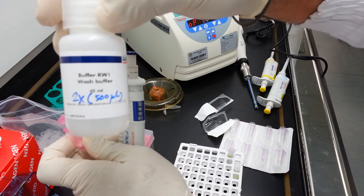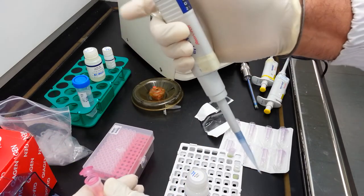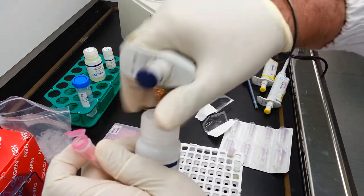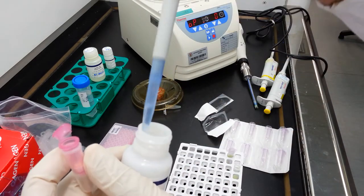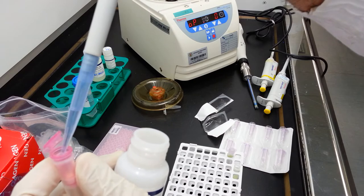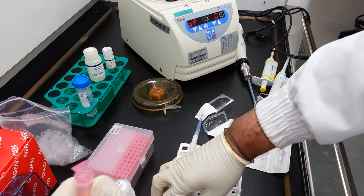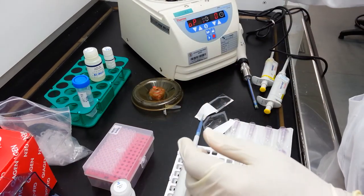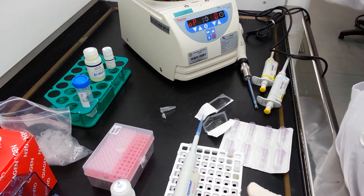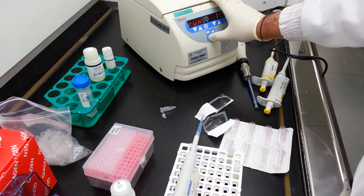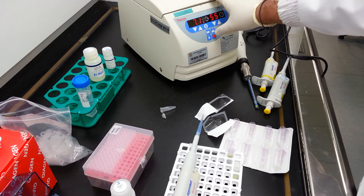This is buffer RW1. You need to transfer 500 microliters of buffer RW1 into the upper section of this tube. So we have RW1 here. Spin down briefly for 15 seconds at 13,000 G.